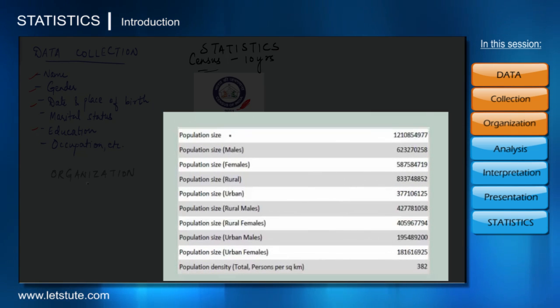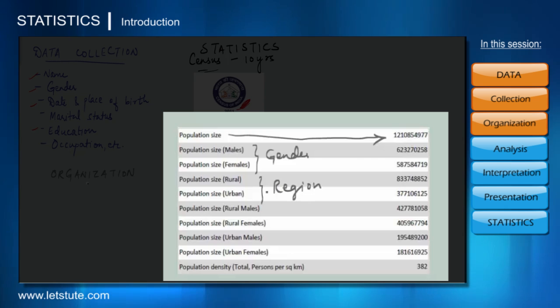For example, take a look at this data from the recent Indian census. We got data about the population size of India. Now we can further organize it in terms of gender or we can organize it in terms of region, rural or urban, or we can go ahead and organize it in terms of both gender and region.